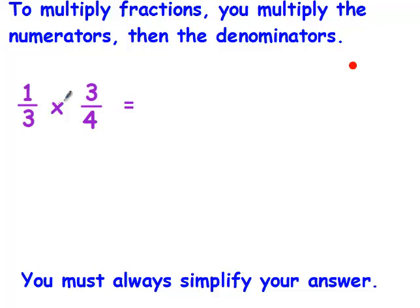So 1 times 3 is 3, and 3 times 4 is 12. But when you multiply fractions, you always have to simplify your answer. So what you need to do is put it in an upside-down staircase and put it in simplest form.